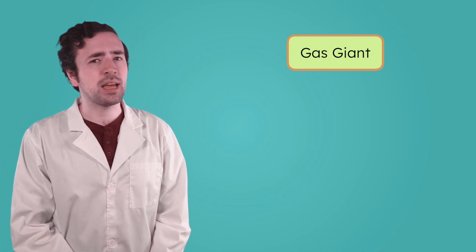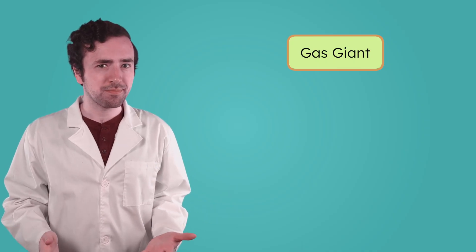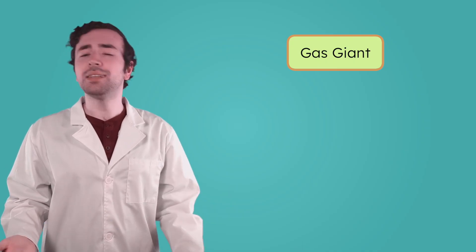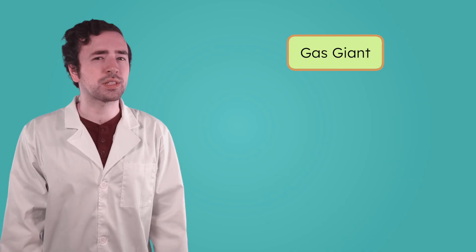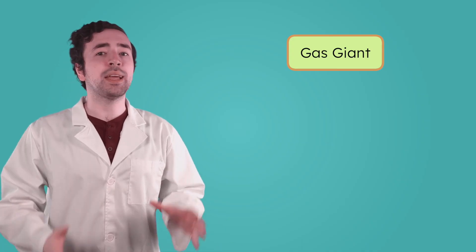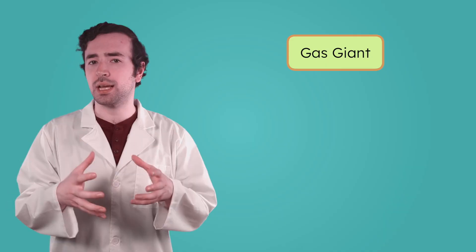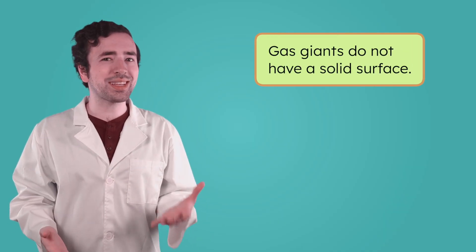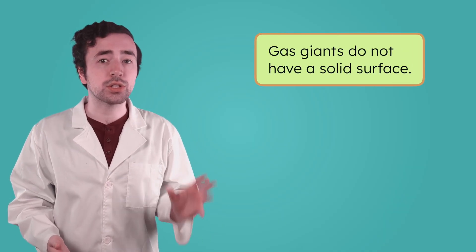Jupiter is so big, scientists call it a gas giant. Based on that name, what do you think Jupiter is made of? Gas. Instead of the rocky solid surfaces of the inner planets, Jupiter and other gas giants are mostly made of gases that are pressed tightly together. Because of this, Jupiter doesn't actually have a solid surface.